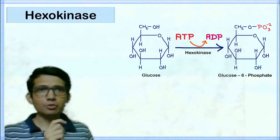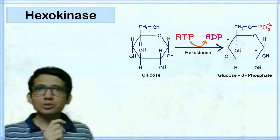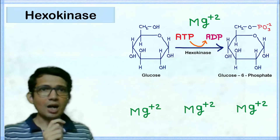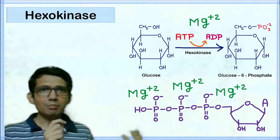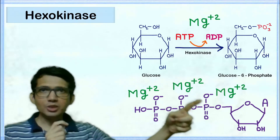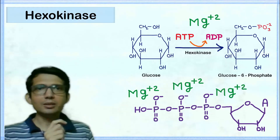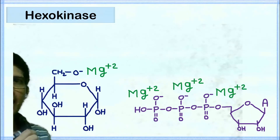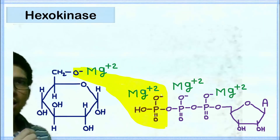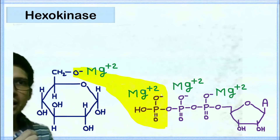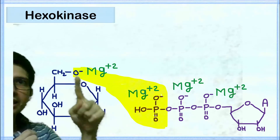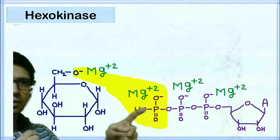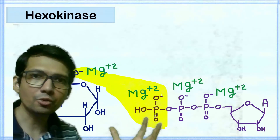This reaction requires the presence of magnesium ions. The magnesium ions are positively charged, and the positive charge of magnesium ions shields the negative charge on the oxygen attached with the phosphate of ATP. This shielding allows the reaction between the phosphate and the hydroxyl group attached with the sixth carbon atom of glucose. If magnesium ions are absent, then these negatively charged oxygen atoms will repel each other and this reaction will not occur. So magnesium ions play a very important role in this reaction.